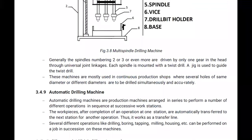Then there is the automatic drilling machine. Automatic drilling machines are production machines arranged in series to perform a number of different operations in sequence at successive workstations. The workpieces, after completion of an operation at one station, are automatically transferred to the next station for another operation — thus it works as a transfer line.